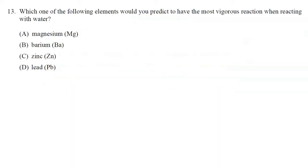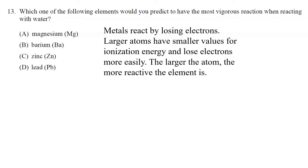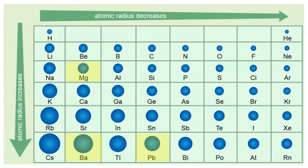Number thirteen: we have four elements — magnesium, barium, zinc, and lead — all metals. We need to figure out which would have the most vigorous reaction with water. Metals react by losing electrons; larger atoms have smaller ionization energy values and lose electrons more easily, so the larger the metal atom, the more reactive it is. Atomic radius decreases left to right across a period and increases top to bottom down a group. The atom with the largest atomic radius — and therefore most reactive — in this example would be barium, in the lower-left corner of the periodic table. Correct answer is B.